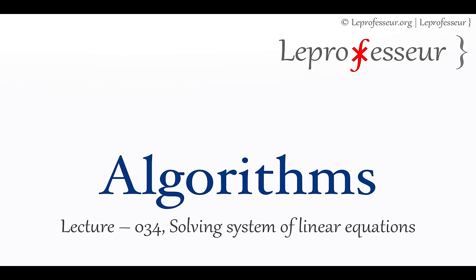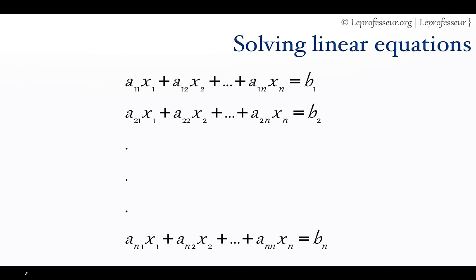What do we mean by a system of linear equations? To put simply, you have n variables and n equations. For example, given in this form: you have some constant multiplied by the variable, plus another constant multiplied by the variable, and so on. So you have such a system of equations and we want to solve it.